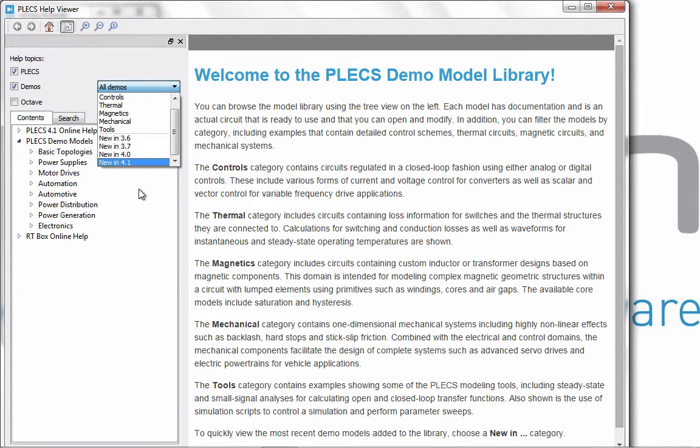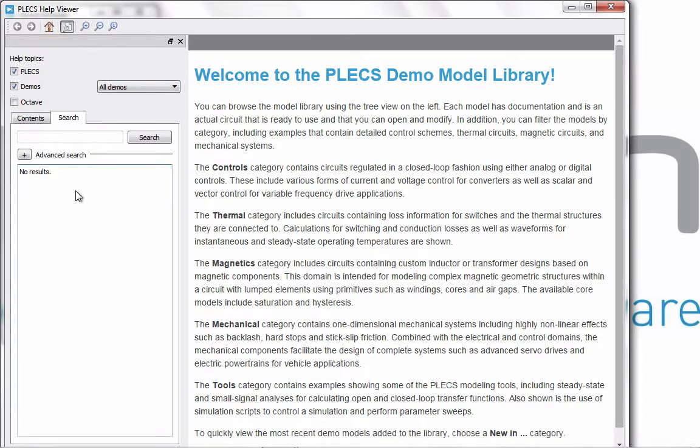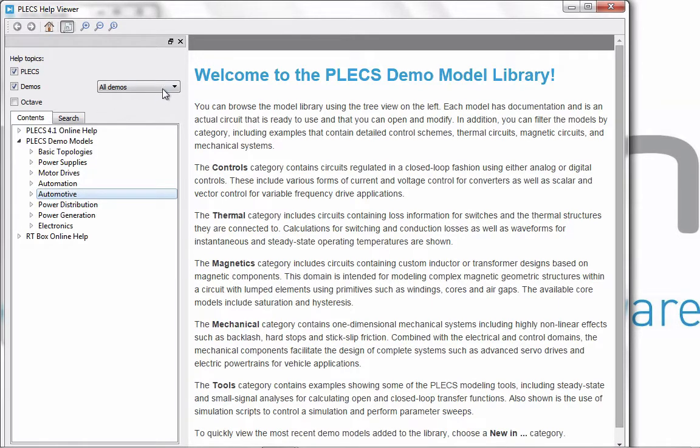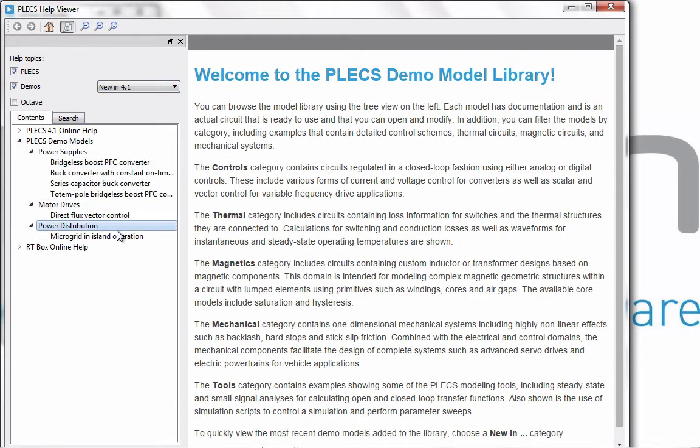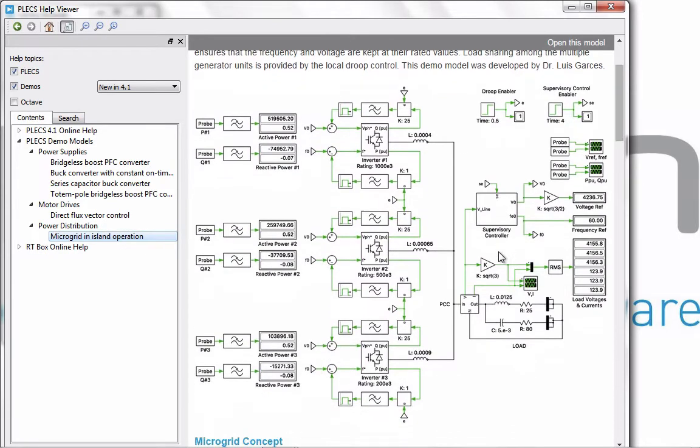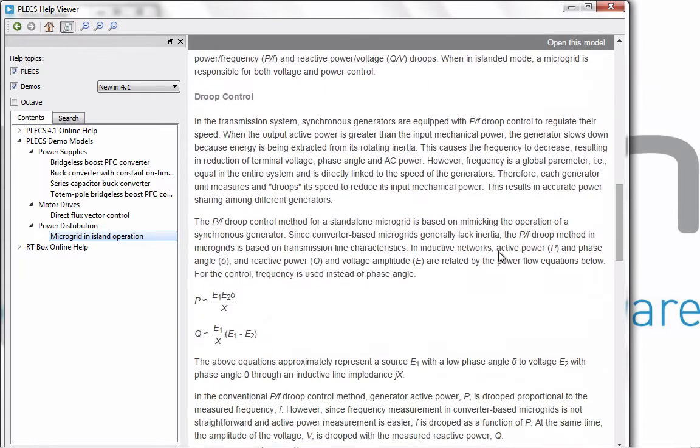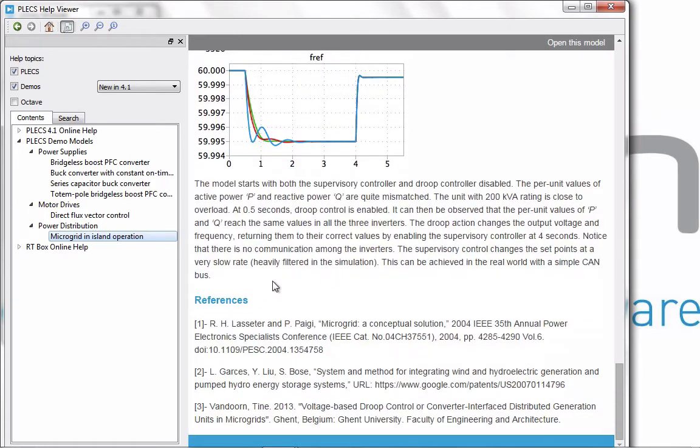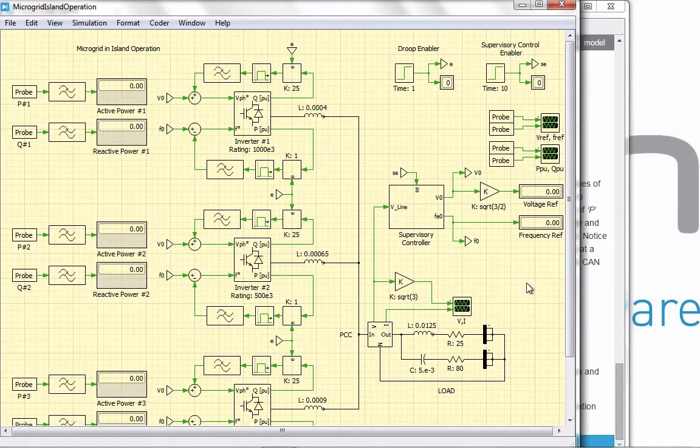You could search for demo models or for a topic of your interest under the search tab. Please note that to view microgrid demo model, you need Plex 4.1 version or higher. A brief description of this demo model has been provided here along with a few references. To open this model, click the open this model tab on the top right corner.